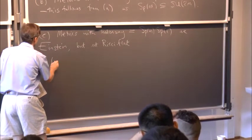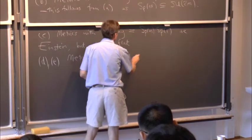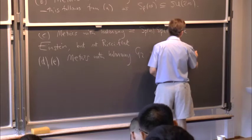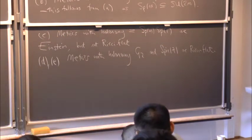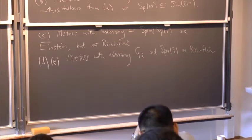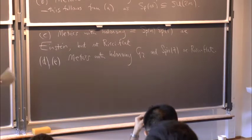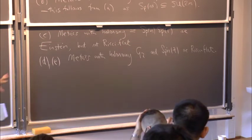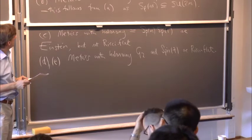And then finally D and E, let's say, metrics with holonomy G2 in 7 dimensions and SP(M) in 8 dimensions are also Ricci flat. So that's kind of nice. There's various reasons to feel that Einstein metrics or Ricci flat metrics are kind of, in some sense, the best kind of metrics you can find on a given manifold. They're stationary for the volume. They're generally kind of nice classes of metrics and then you automatically get these out.